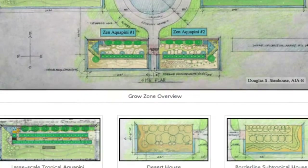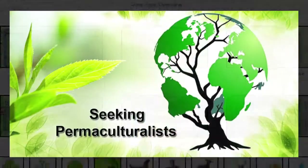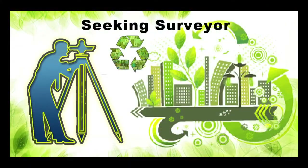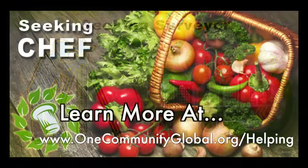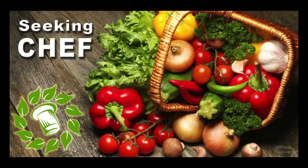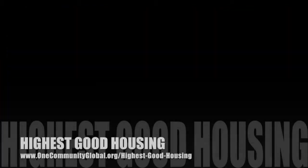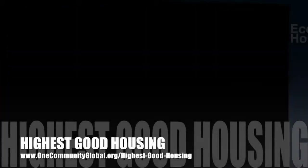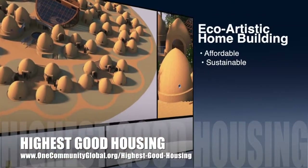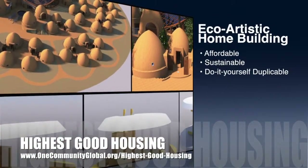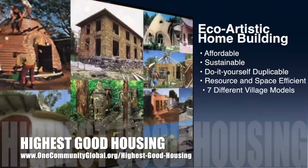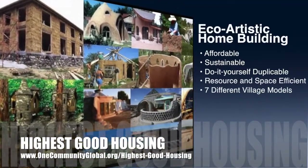In this area of our open source project, we are seeking permaculturalists, an irrigation specialist, a surveyor, and a chef to join our team as either consultants or pioneers who will be moving onto the property with us. OneCommunity's approach to Highest Good Housing is eco-artistic home building that is affordable, sustainable, do-it-yourself duplicable, resource and space efficient, and consists of seven different sustainably constructed village models.